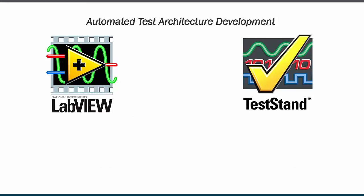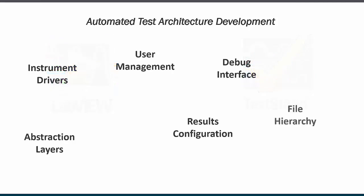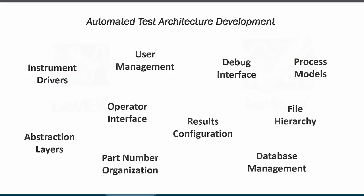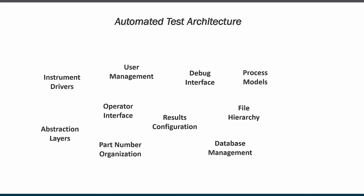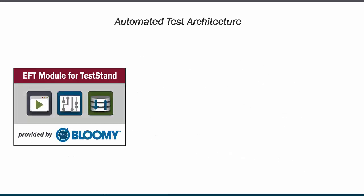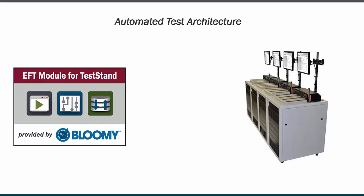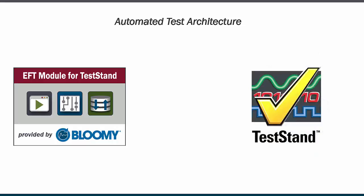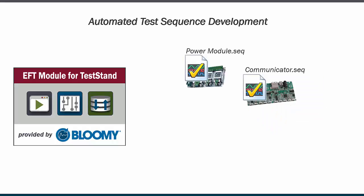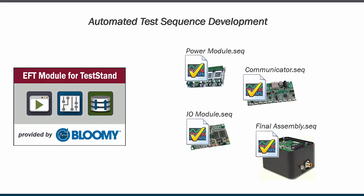While Test Stand provides the general components of a test framework right out of the box, they are often intended to be customized or replaced to meet the specific needs of a test engineering team. Depending on requirements and complexity, this typically requires weeks to months of implementation and maintenance effort, often before test sequence development can even begin. The Electronics Functional Test, or EFT Module for Test Stand, provides an out-of-the-box architecture that focuses NI Test Stand on automated functional tests of electronic assemblies for the production environment, all while maintaining the extensibility and low-level control of full-featured Test Stand. This allows test engineers to concentrate on the specific test sequence development for each of their products, rather than programming general architecture-level tools.